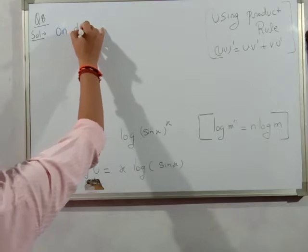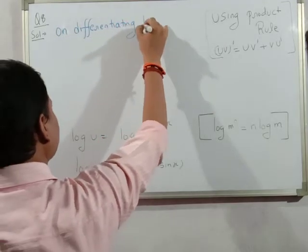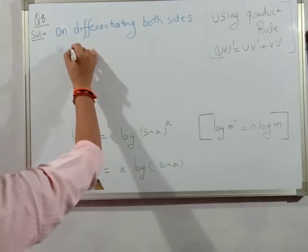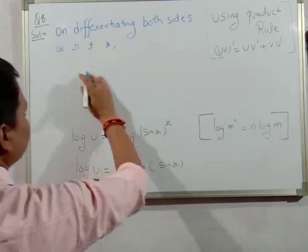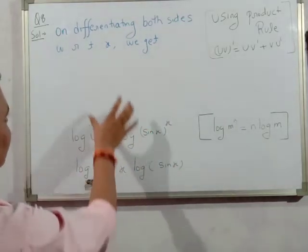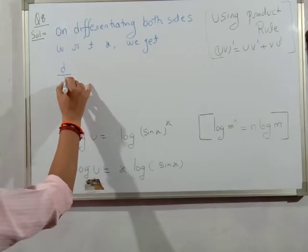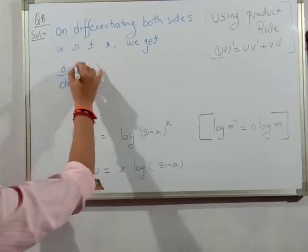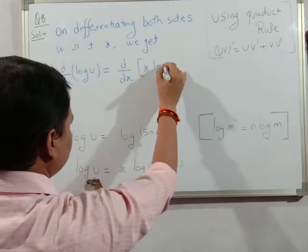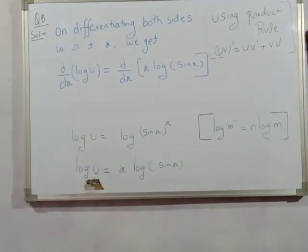On differentiating both sides with respect to x, we get: derivative of log u equals derivative of x·log(sin x). The derivative of the log function is 1/u on the left side.